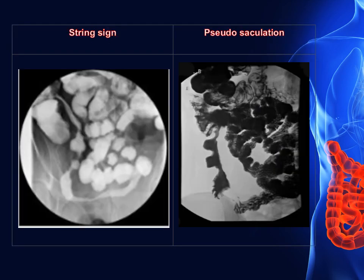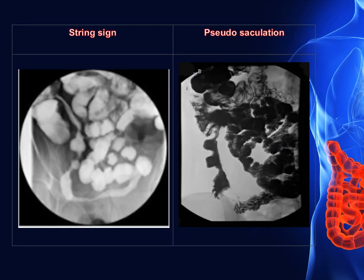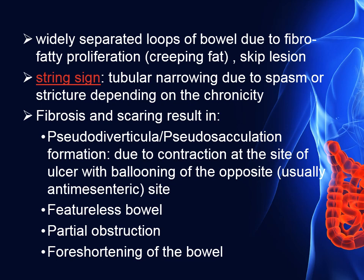The string sign is a tubular narrowing secondary to spasm or stricture according to the chronicity of the disease. This image also represents pseudo-sacculation, which is pseudo-diverticular formation secondary to contraction at the site of the ulcer with ballooning of the opposite side, and creeping of the fat between widely separated loops of bowel due to fibro-fatty proliferation. There is also a skip lesion — normal bowel followed by abnormal bowel.